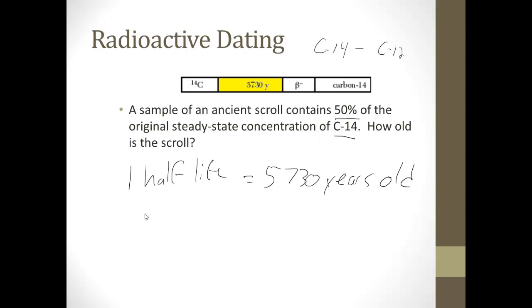If it contained, let's say, 25% original, that means it would have undergone two half-lives, right? Because initially, 100%, divide it by 2 once gives us 50%. Divide it by 2 again gives us 25%. So that's 1, 2 half-lives. So that would mean it would be 2 times 5,730 years old, or 11,460 years old.